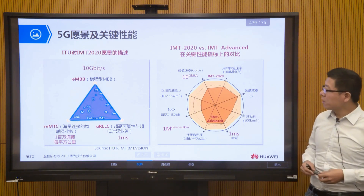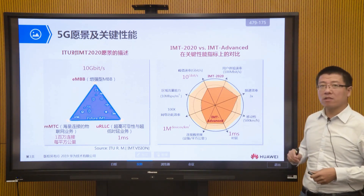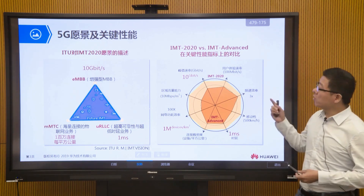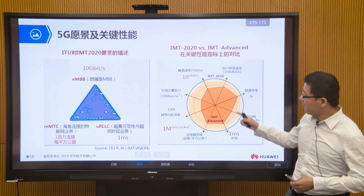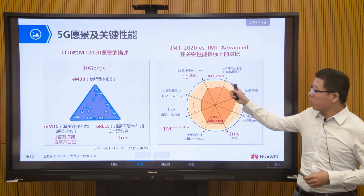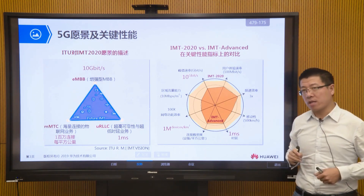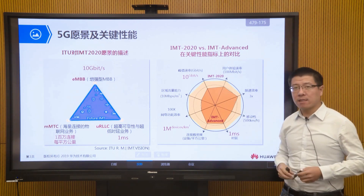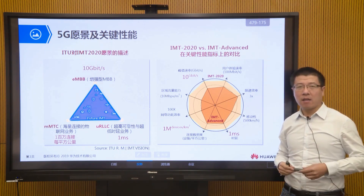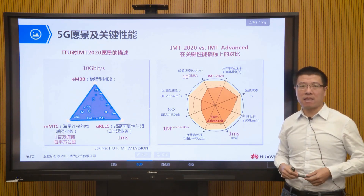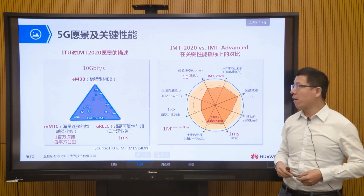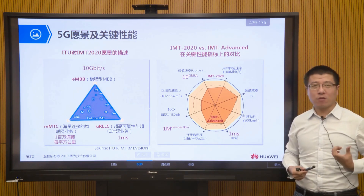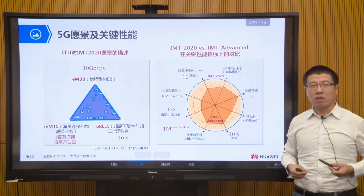Overall, 5G network key capabilities are significantly enhanced compared to 4G. For peak rate: in the 4G era, LTE-A achieves a downlink rate of 1 Gbps; in the 5G era, we reach 10 Gbps or above. For user experience rate — which is more important than peak rate for ordinary users — in the 4G era it is typically 20–40 Mbps, while in the 5G era the downlink user experience rate target is 100 Mbps, a great improvement.